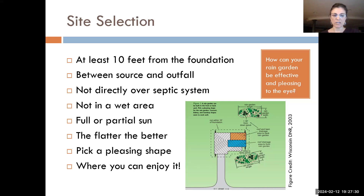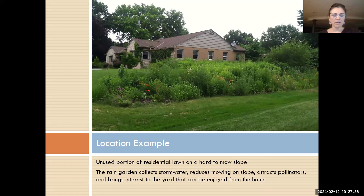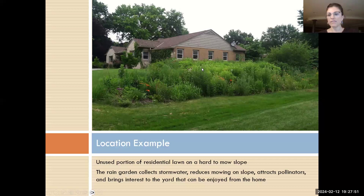Mine is located right outside my bathroom window and it's the first thing I see every day. As an example, this house is on a slope — the bottom half is a rain garden and the top half is just a vegetated slope. It was hard to mow and ugly, so that's why we chose this area for the rain garden.